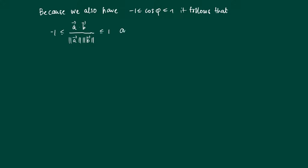So we obtain the following two-sided inequality: minus the length of a times the length of b is less than or equal to the inner product of the two vectors a and b, which is less than or equal to the length of a times the length of b.